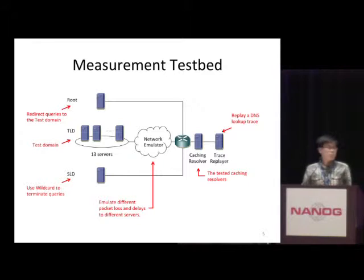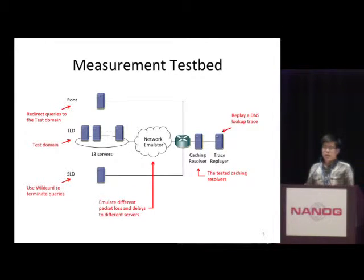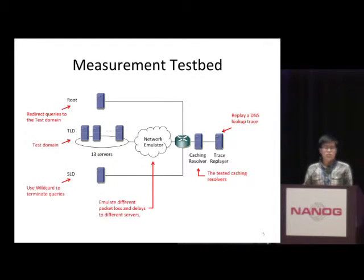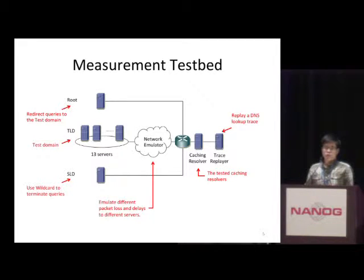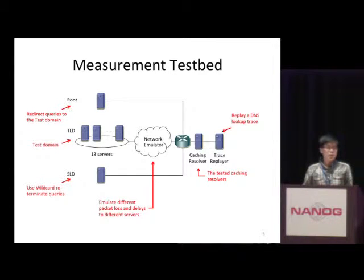Here is an illustration of our test setup. Our measurement is a trace-driven measurement. We collect a DNS lookup trace and send it to the tested caching resolvers. All these tested caching resolvers use their default settings. Since name server selection is only meaningful when talking about one domain, we chose the .com domain in our testbed as the target domain.